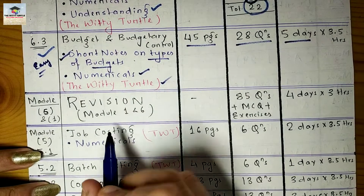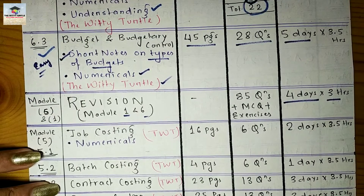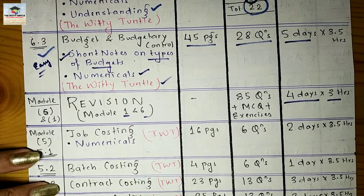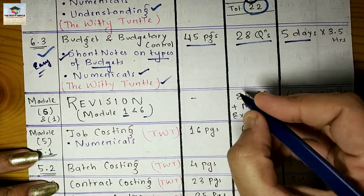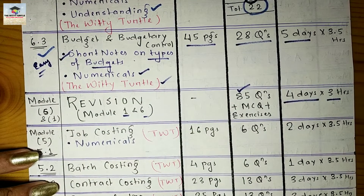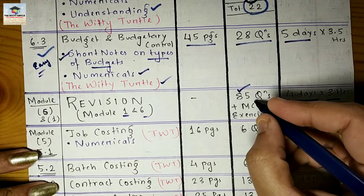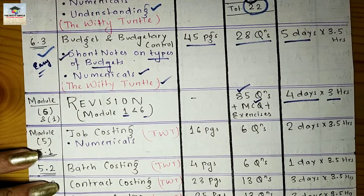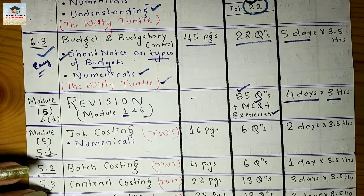After 20 days, having completed Module 1 and Module 6, you do your first revision of both modules — this takes four days, three hours each day. In these four days, re-solve all 85 questions from these chapters, complete all the MCQs given at the end of each chapter, and attempt the additional questions in the exercise section.